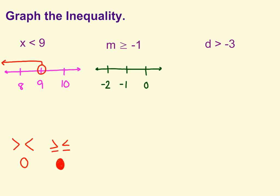And then it's a greater than or equal to, and it has that or equal to bar right there. We're going to have a closed circle, which means that m can equal the negative 1 as well.